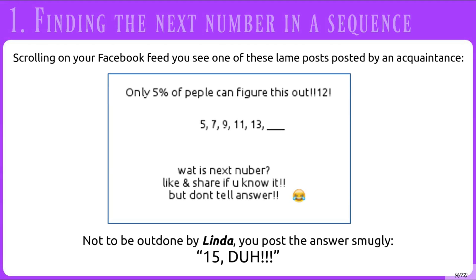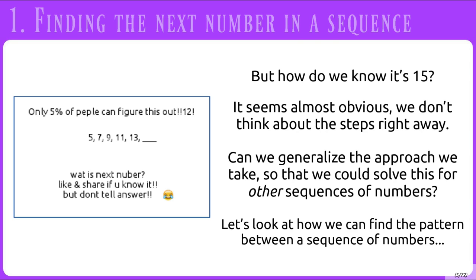One day you are scrolling down your Facebook feed and you see one of these posts. Not to be outdone, you post the answer smugly: fifteen. But how do we know it's fifteen? It seems almost obvious, so we don't really think about the steps we use to get to the answer. But can we generalize the approach so that we can solve this for other sequences of numbers?